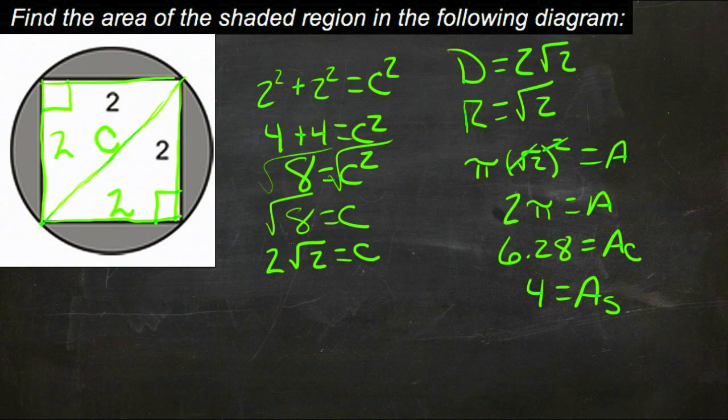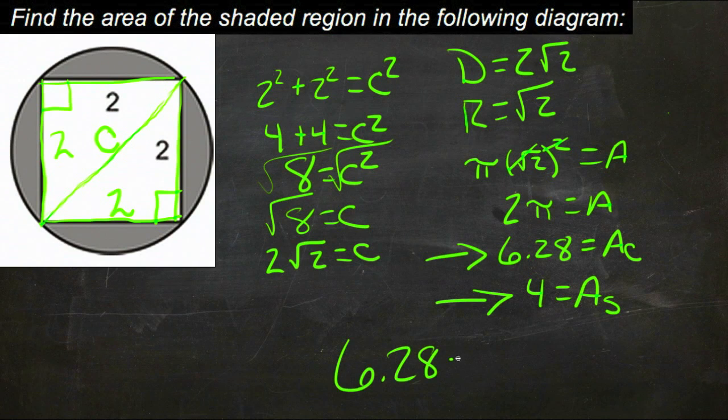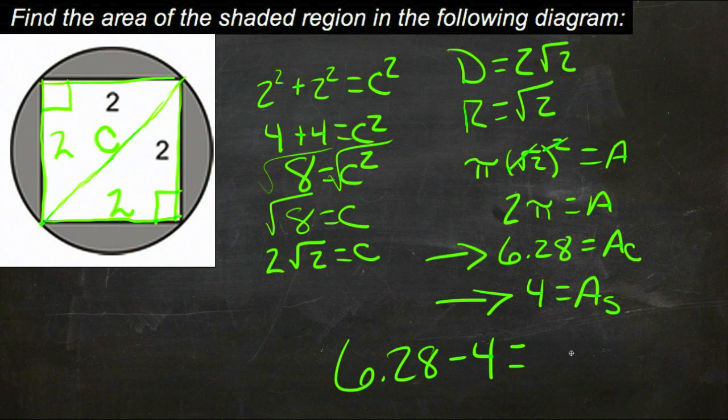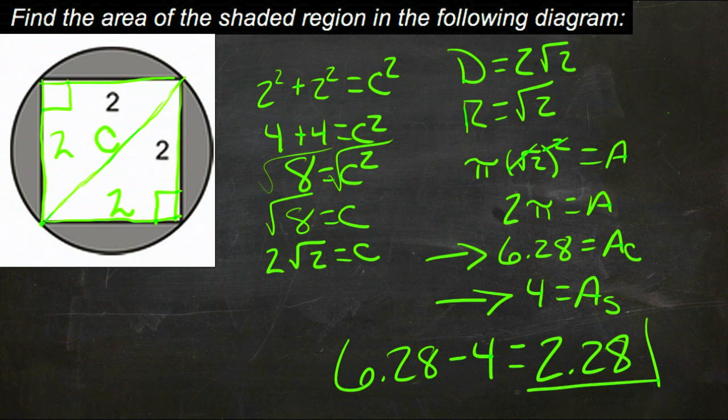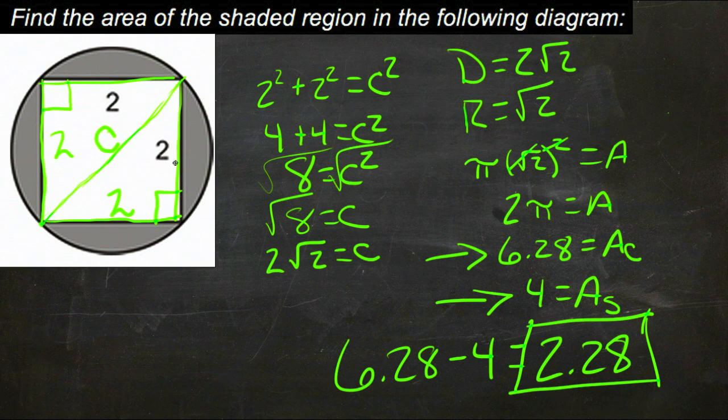So to find the area of the shaded region, we just take the area of the circle and subtract the area of the square, so we get 6.28 minus 4, or 2.28, and that equals the area of the shaded region, or the difference between the square and the circle.